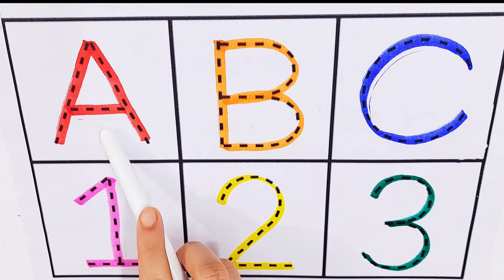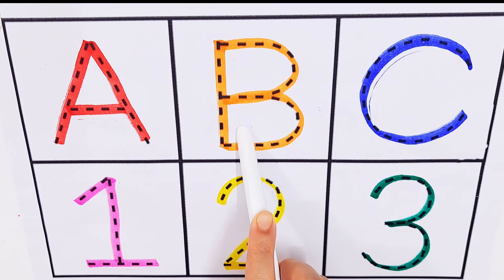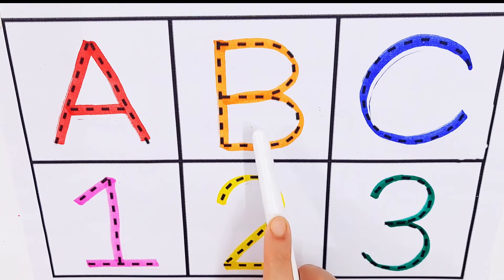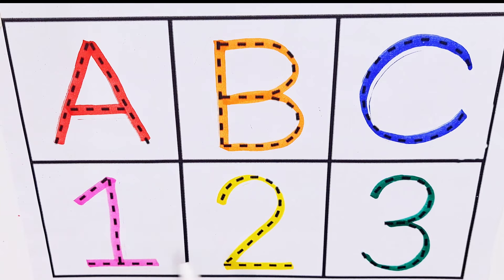A, A for avocado, A for ant. B, B for butterfly, B for banana. C, C for candy, C for candle. Number one, number two, number three.